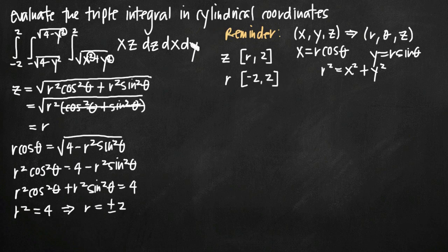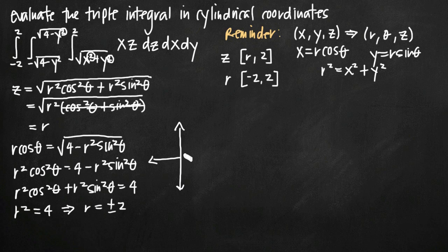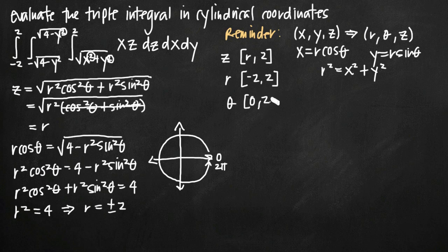Moving on to y, the outermost integral's limits relate to y. We have y from negative 2 to positive 2, and y becomes theta. The domain of theta is simply 0 to 2 pi — in our polar coordinate system the angle starts at 0, sweeps all the way around, and at 2 pi it comes back to the start. So theta goes from 0 to 2 pi; we don't even need to use conversion formulas for this one.